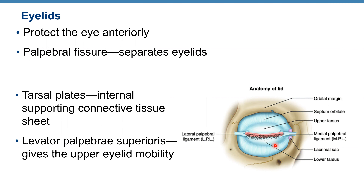The tarsal plates are internal supporting connective tissue. You also have a special muscle that elevates your palpebria called the levator palpebrae superioris. The name itself tells you it elevates your eyelids and gives the upper eyelid mobility.